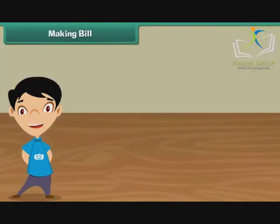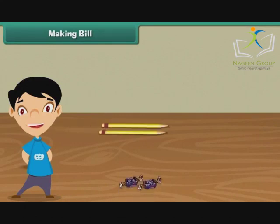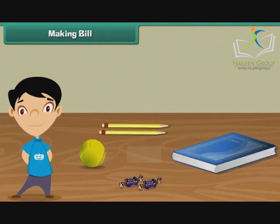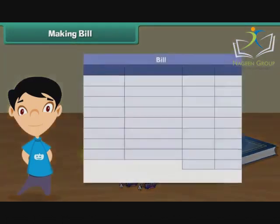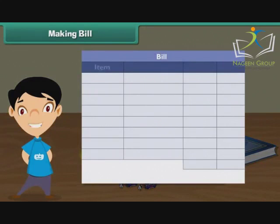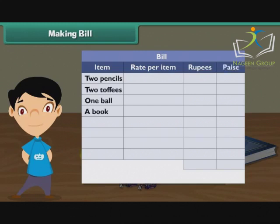Now we will learn how to make a bill. Ramita bought 2 pencils, 2 toffees, 1 ball, and a book. Prepare a bill for Ramita. Make 4 columns: Item, Rate Per Item, Rupees, and Paise. Under the item column write the names of the different items purchased. Under the rate per item column write 2 rupees, 1 rupee 25 paise, 5 rupees, and 10 rupees against pencil, toffees, ball, and book.